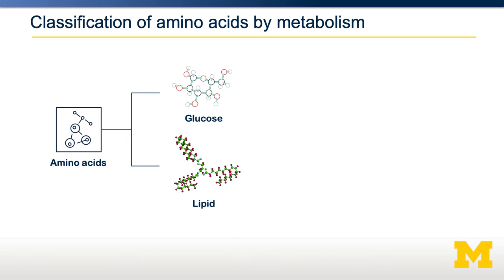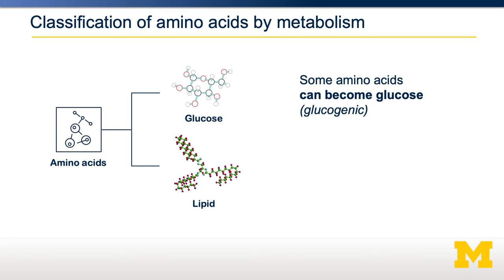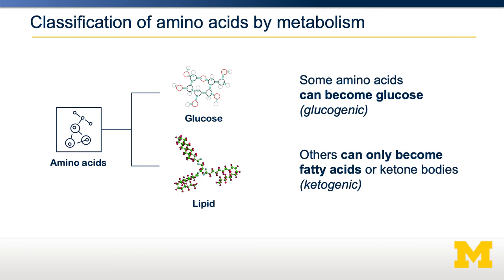PKU is relatively rare, affecting 1 in 12,000 people, and it's screened at birth in all 50 states. Another way to classify amino acids, aside from essentiality, is what they can be converted to. Amino acids can be converted into glucose — the glucogenic amino acids — or into ketone bodies — the ketogenic amino acids. Each of the 20 amino acids has a different metabolic pathway, which dictates whether they're glucogenic or ketogenic.